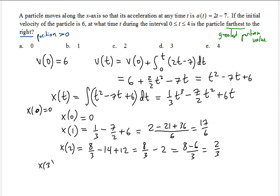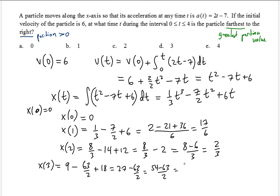Let's check the position at t equals 3. Substituting 3: 27 over 3 gives 9, minus 9 times 7 which is 63/2, plus 18. That's 27 minus 63/2, or 54 minus 63 over 2, which is less than 0. So we don't even need the exact value — it's negative, meaning the particle is on the left, not the right.